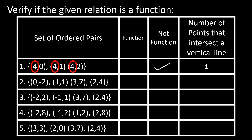The number of points that intersect a vertical line is 1, which is x=4. For number 2, we have 0, 1, 3, and 2 as abscissas — they are all different from each other, so there are no repeated abscissas. It is a function. For number 3, the domains are -2, -1, 3, and 2, which are also all different. We have 0 points that intersect a vertical line, and it is a function.